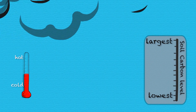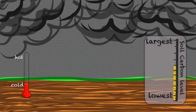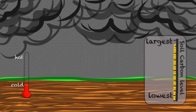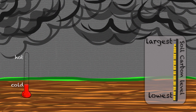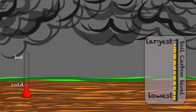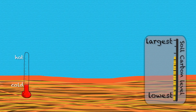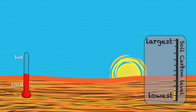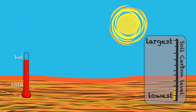Climate is a key driver. The largest soil carbon stores occur where there is high rainfall and cooler temperatures — think about peat bogs. And similarly, the lowest soil carbon stores occur in low rainfall, hot areas, more like the Simpson Desert.